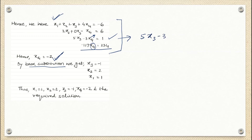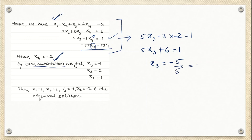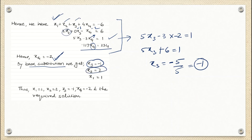Substituting X4 = minus 2 into the third equation: 5·X3 − 3·(−2) = 1, so 5·X3 + 6 = 1, giving X3 = minus 1. Similarly, substituting minus 1 for X3 and minus 2 for X4 gives X2 = 2. Finally, substituting X2, X3, X4 gives X1 = 1. You got the values of X1, X2, X3, X4 by Gauss elimination method.